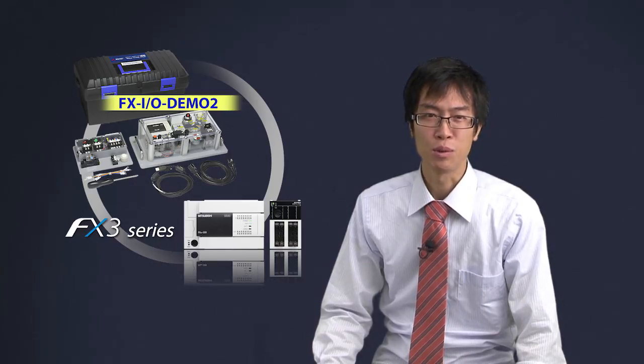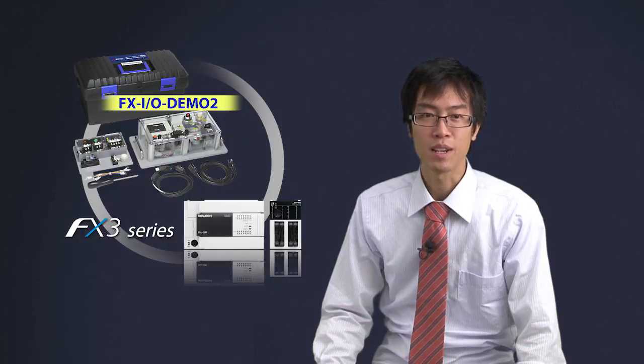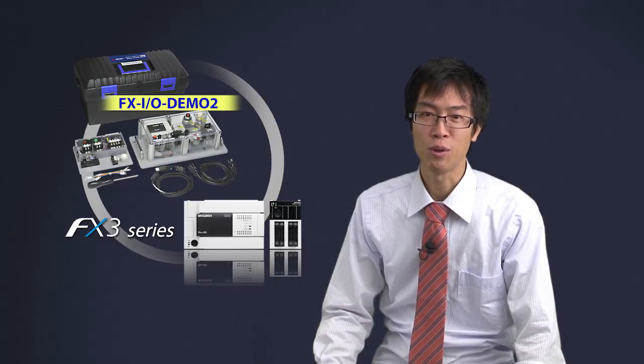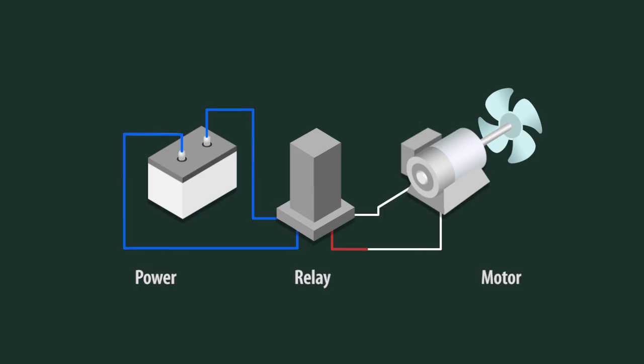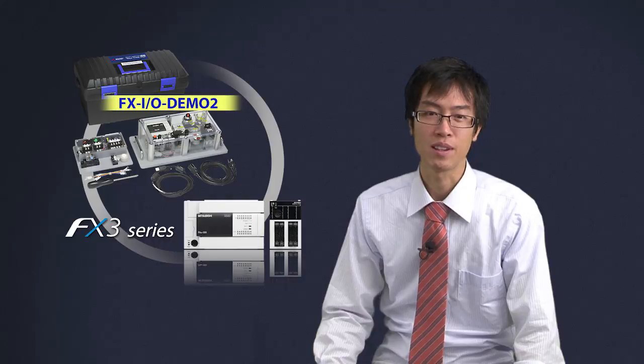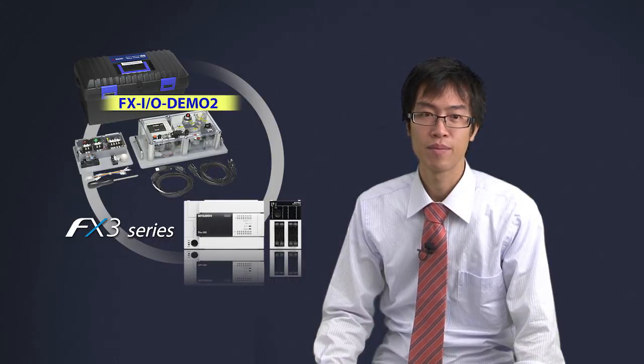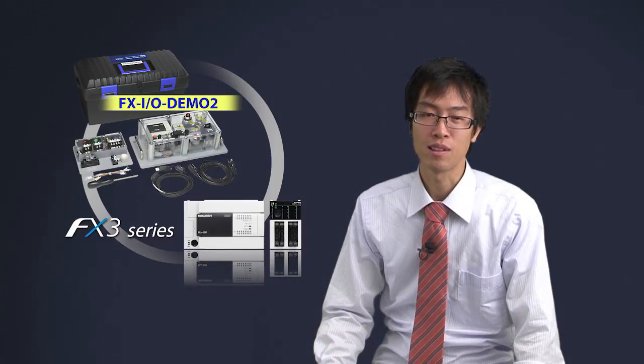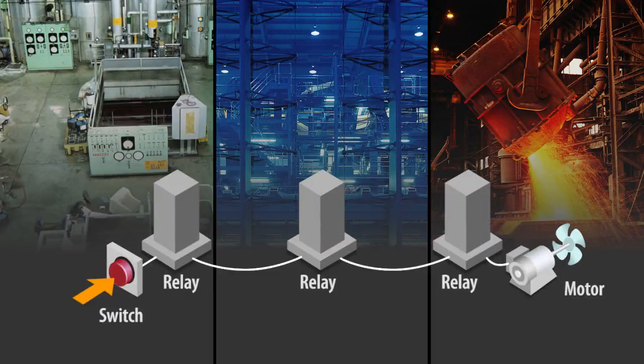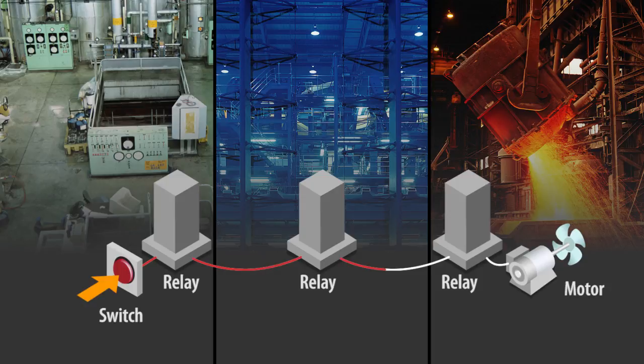So, what is the role of the relay? It can turn a large current on or off with only a small current. Additionally, it is suitable for opening and closing AC circuits like the power connection of a motor. And when sending signals over a long distance, the relay is necessary because high current is required.